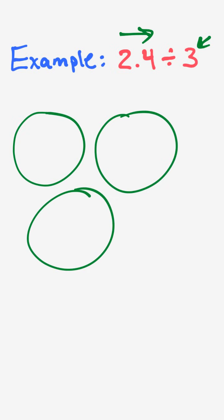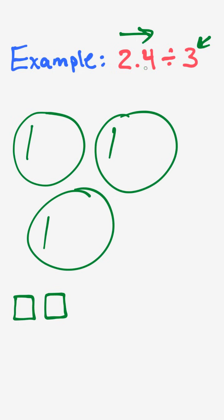Now I distribute left to right. I start with the largest place value — in this case it's the ones place — and we have two ones. I don't have enough ones to give one to each circle, so I draw those on the outside. Remember, the ones are the grids. I do have enough tenths to give one to each circle, so I distribute one tenth, two tenths, three tenths, and now I'm left with just one tenth. That's not enough to give one more to each group, so I draw it on the outside.